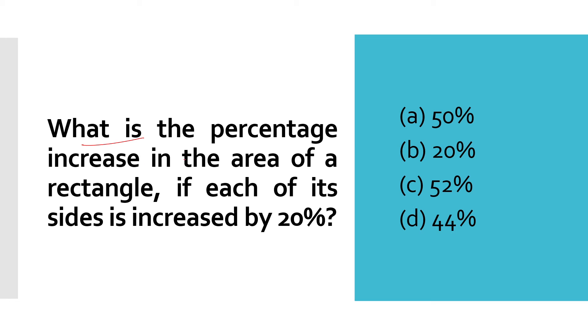Next: What is the percentage increase in the area of a rectangle if each of its sides is increased by 20%? Let's consider we have a rectangle that is 20 meter by 10 meter, so its area will be 200 meter square. Now if we increase 20% on each of the sides, this will become 20 plus 20% of 20, which is 4, so 24. And here 10 plus 20% of 10, which is 2, so 12. So 24 into 12.